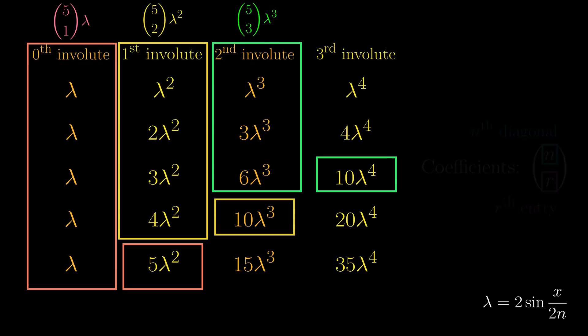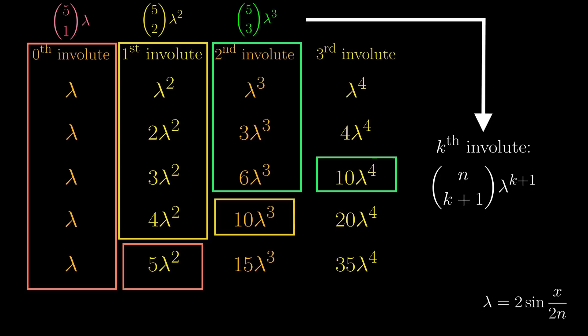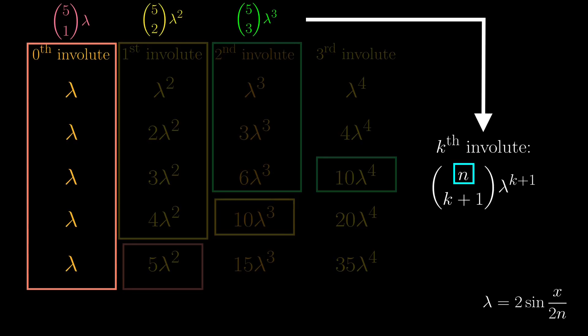And in general, the total length of the kth involute is n choose k plus 1 times lambda to the k plus 1. Here, n is the number of segments in the 0th involute, just that we chose n to be 5 in the beginning. But in any case, we want to let n bigger and bigger so that it approximates the real involutes better and better.